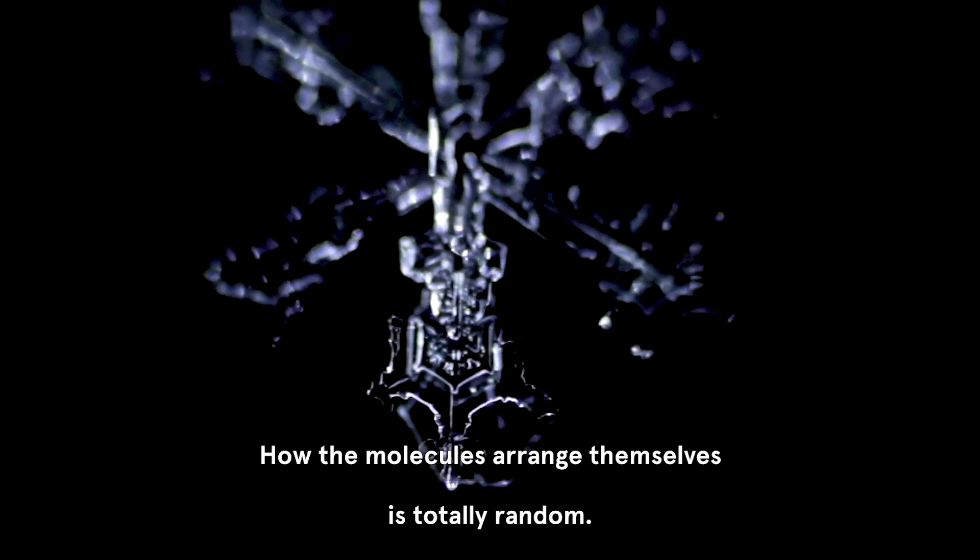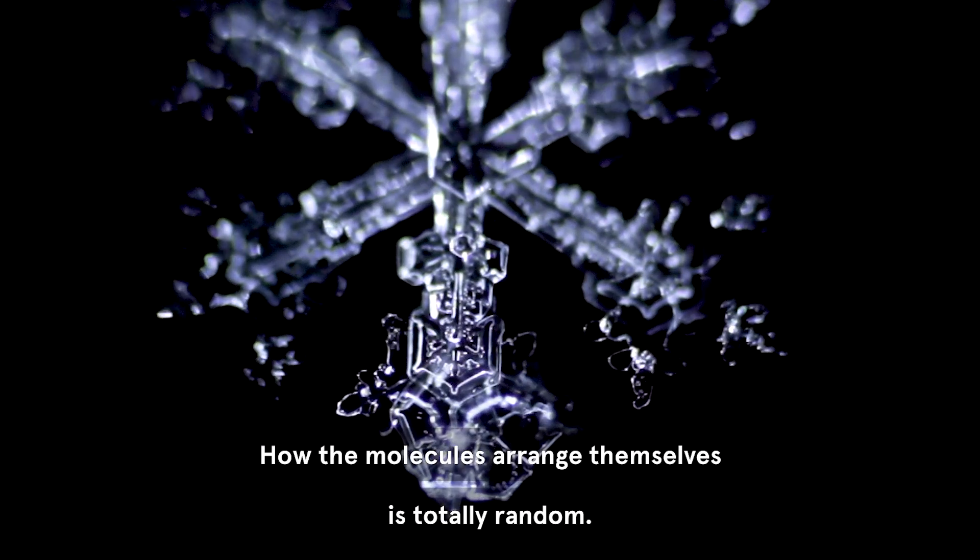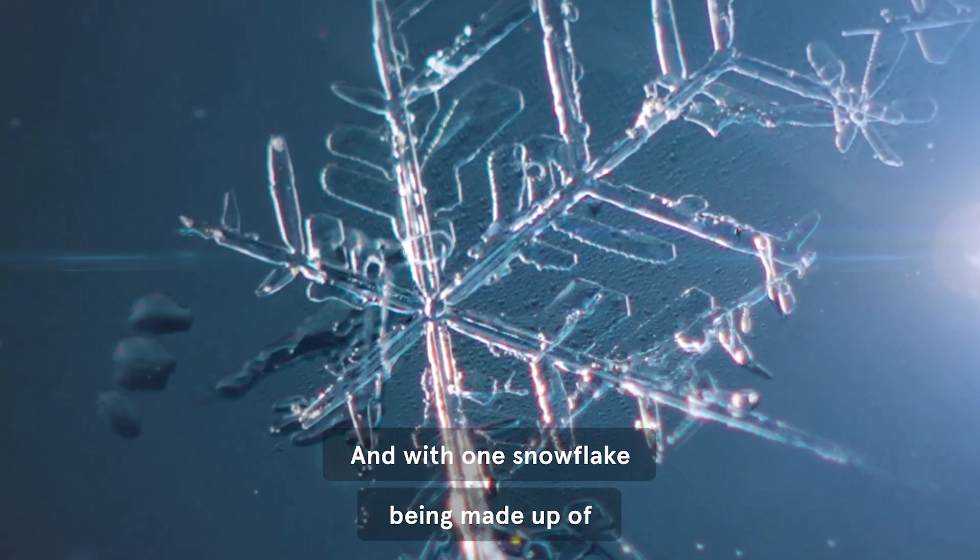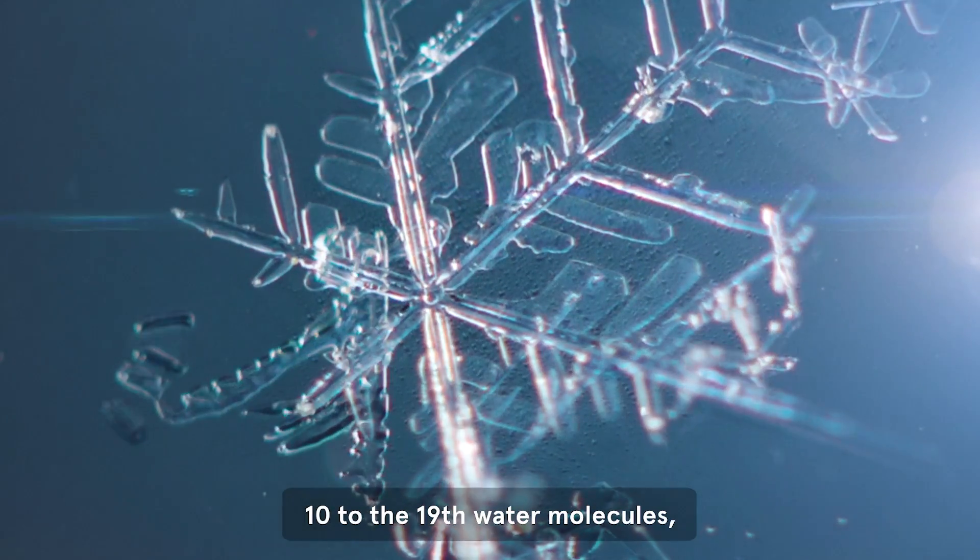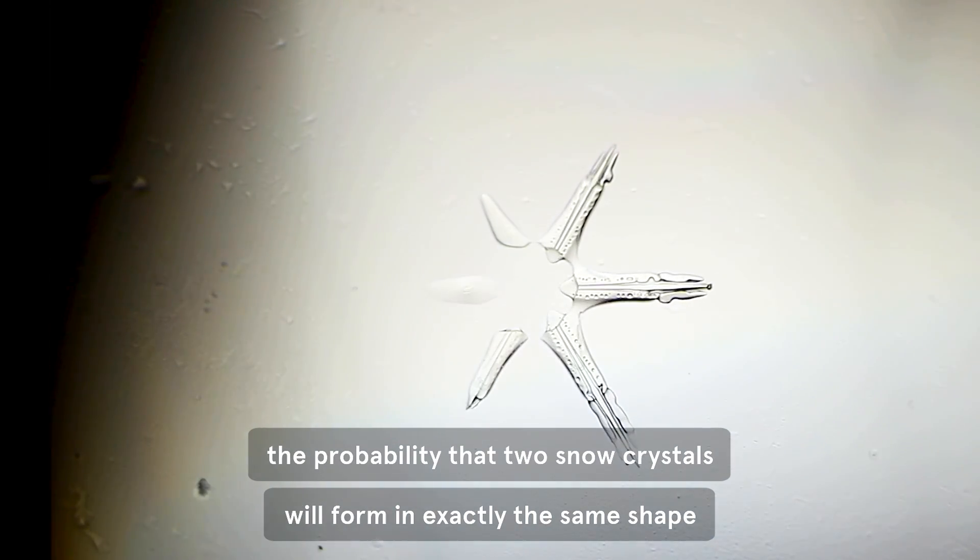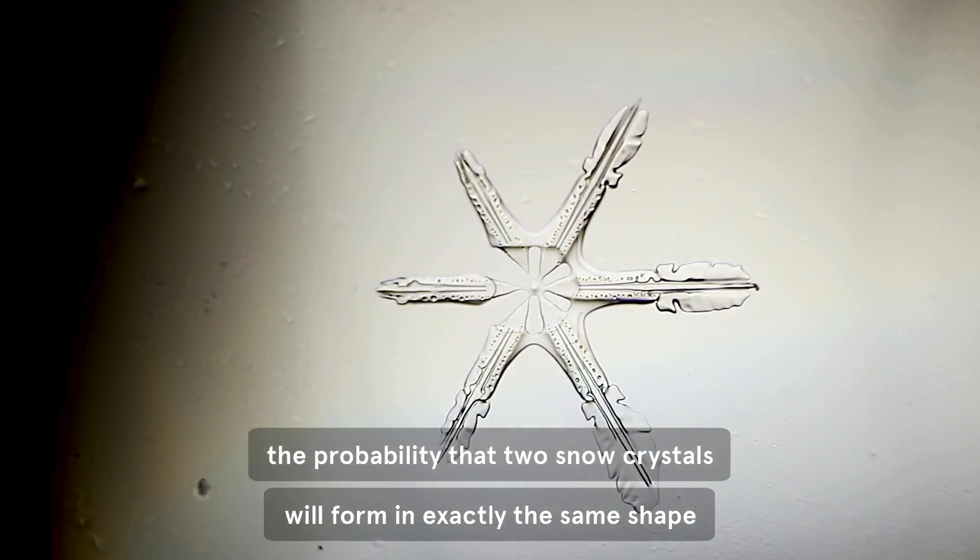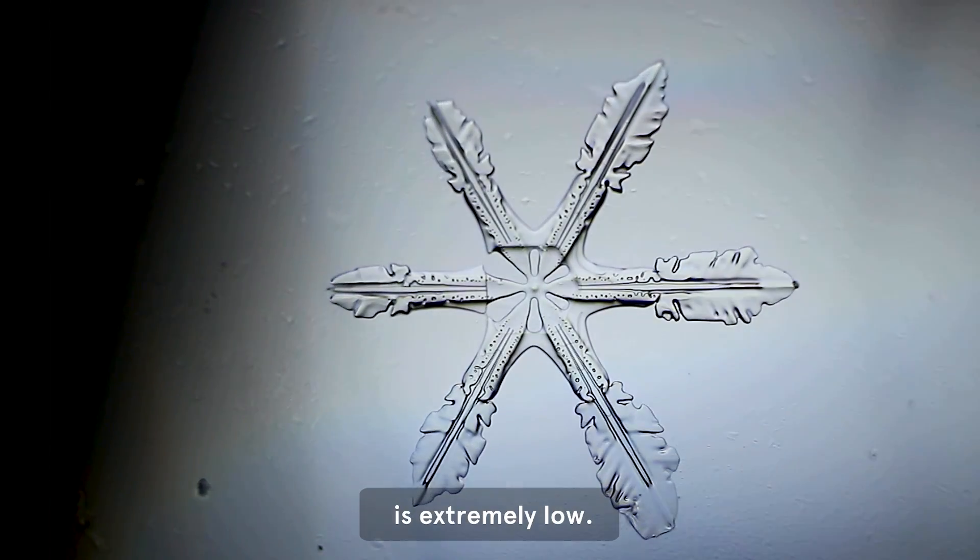How the molecules arrange themselves is totally random. And with one snowflake being made up of 10 to the 19th water molecules, the probability that two snow crystals will form in exactly the same shape is extremely low.